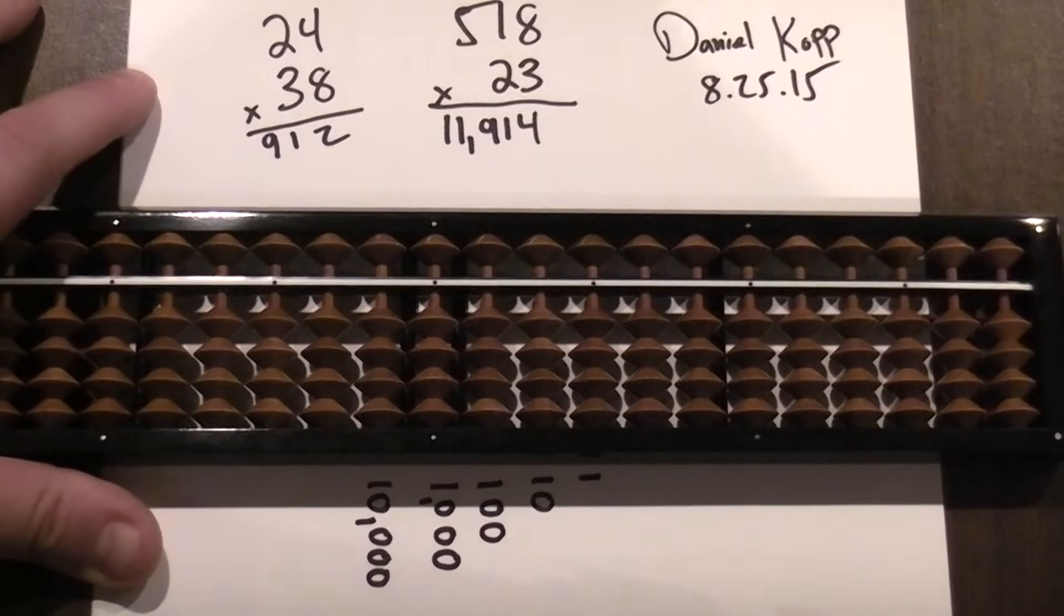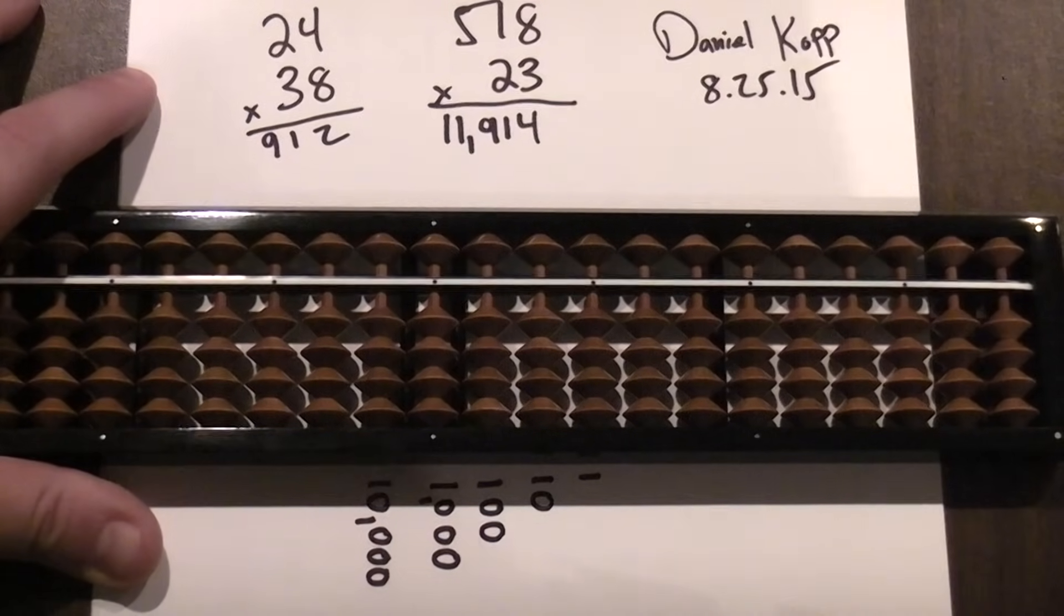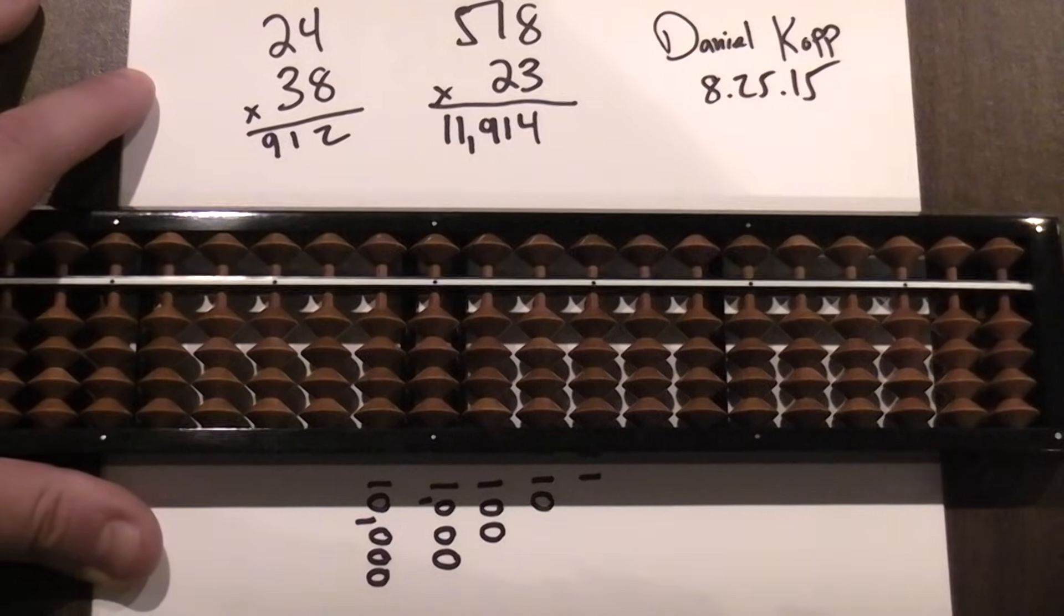The first one is you need to know where to start. And there's a little pattern for where you should start. Now multiplication on the Soroban goes from left to right.